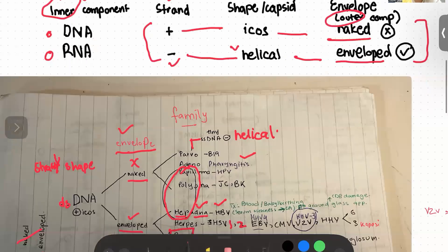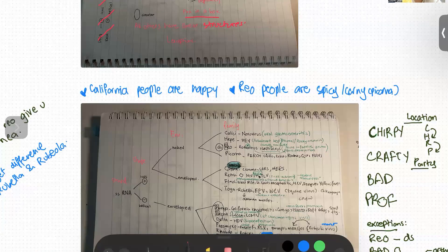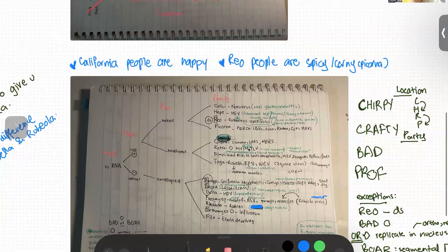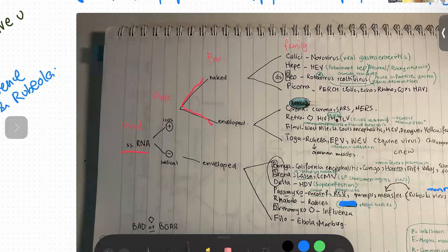Now the RNA viruses are a bit spread out, but let's try. First we'll discuss the strand: it is a single-stranded RNA strand, which could be positive — and if positive, it is icosahedral — or negative, in which case it is helical. It could be either naked or enveloped. The helical is usually enveloped; for simplicity we are only discussing that most are enveloped.